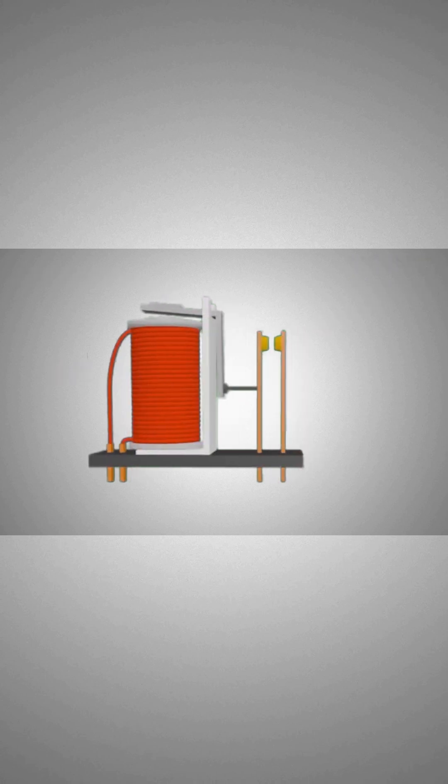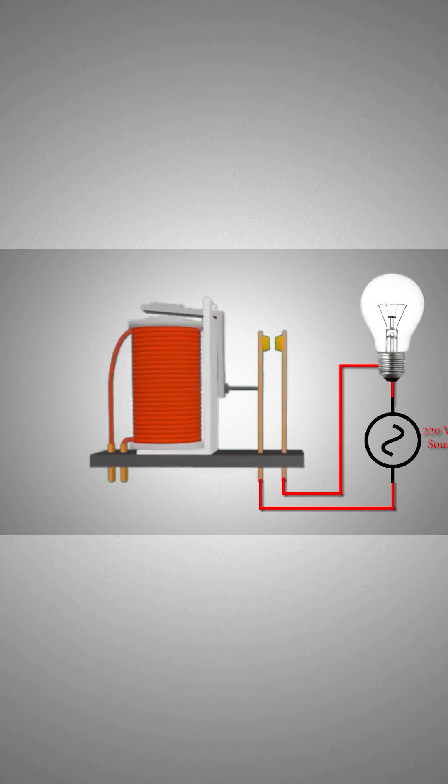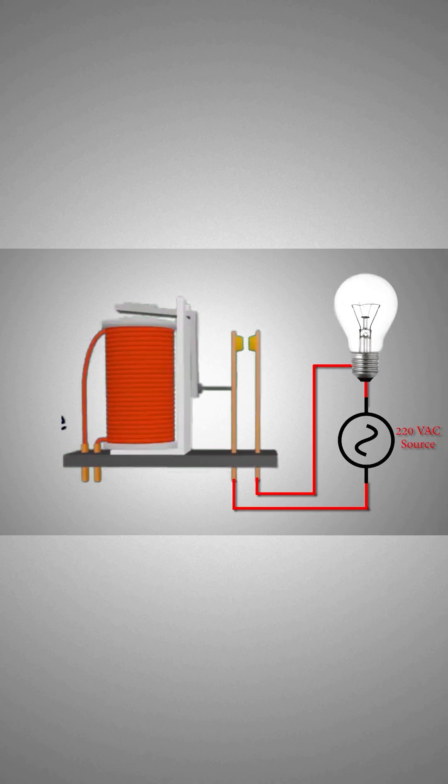Now let's see the simplest example which explains how to use the relay in a circuit. Here we have a bulb at an AC power source connected in series with the relay normal open contacts.